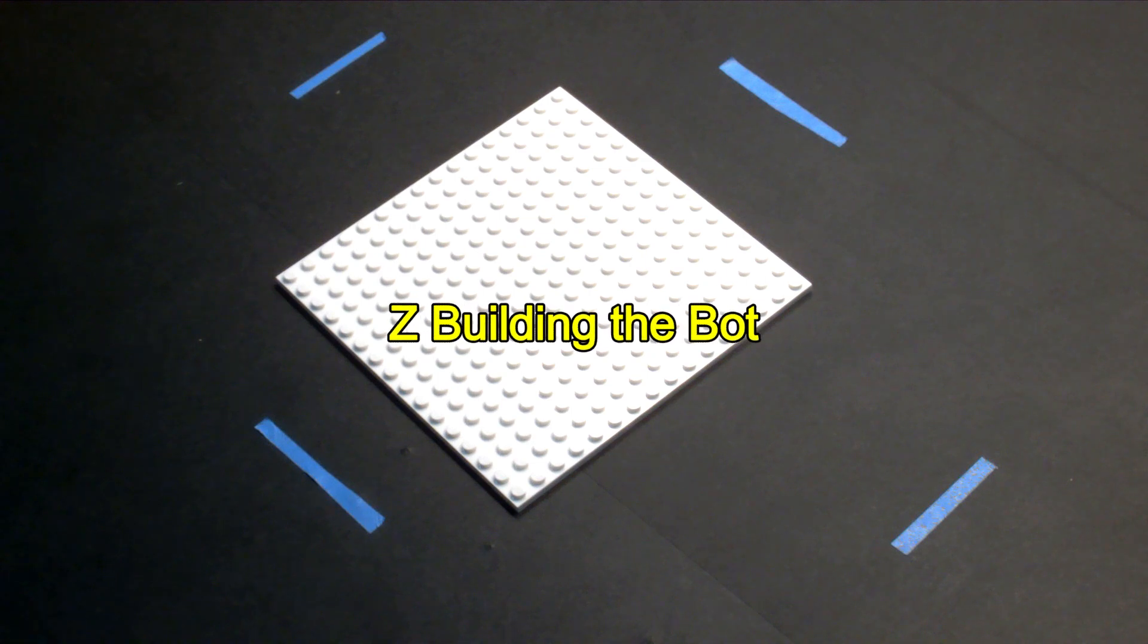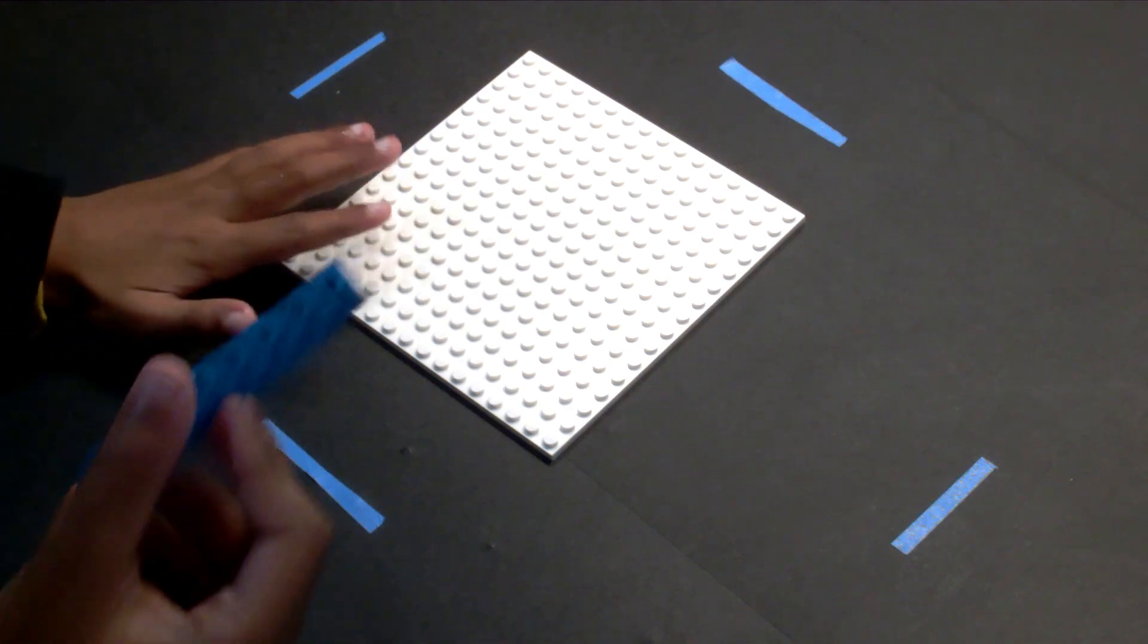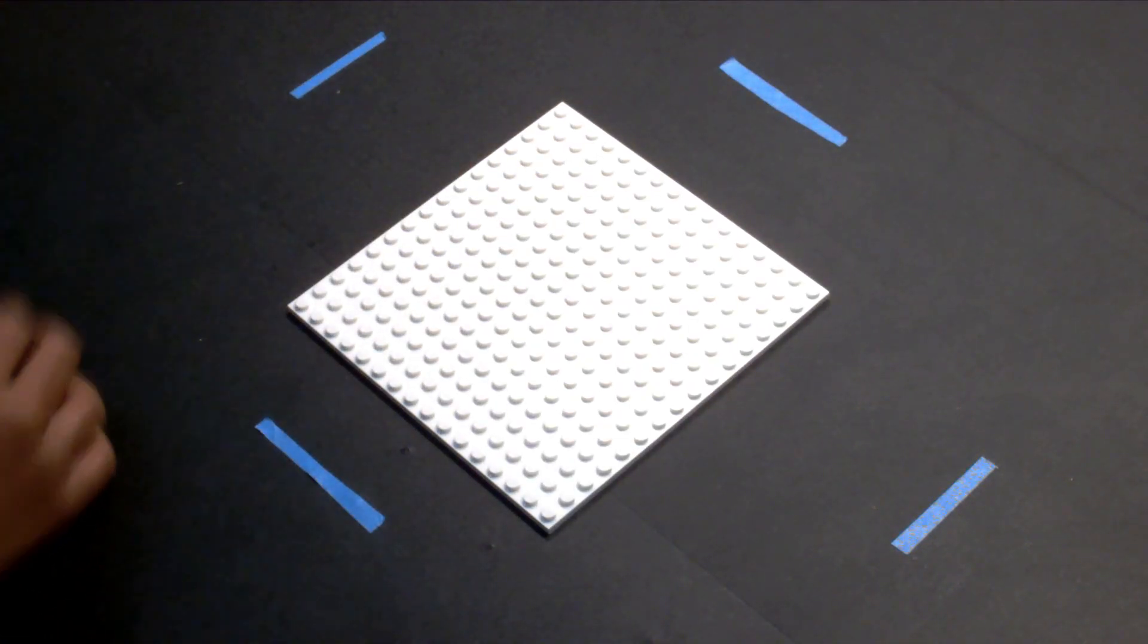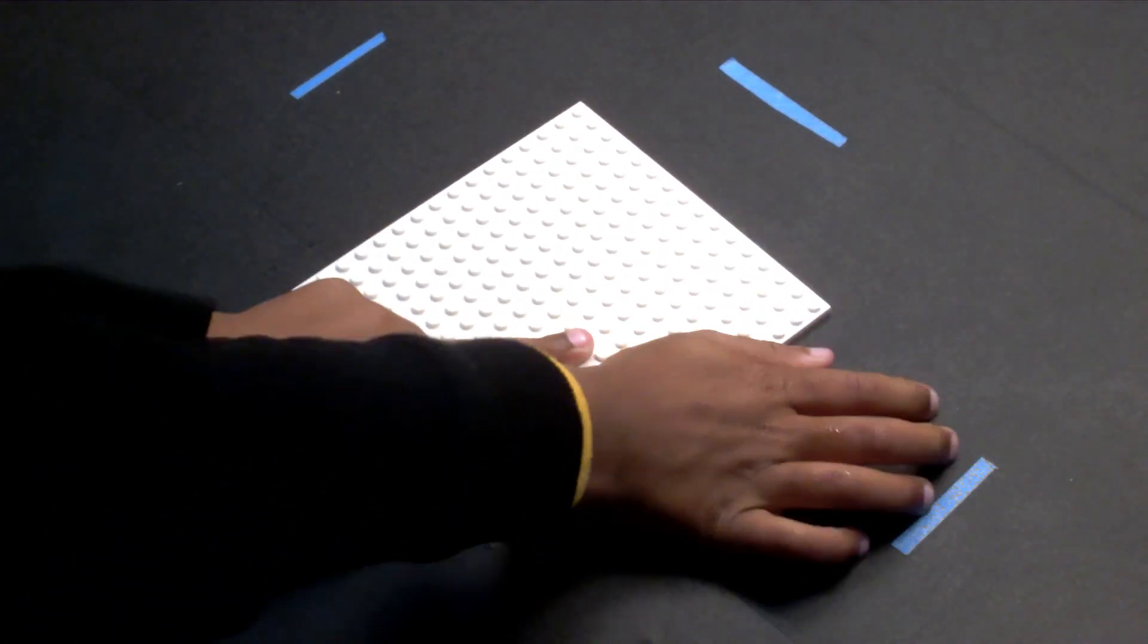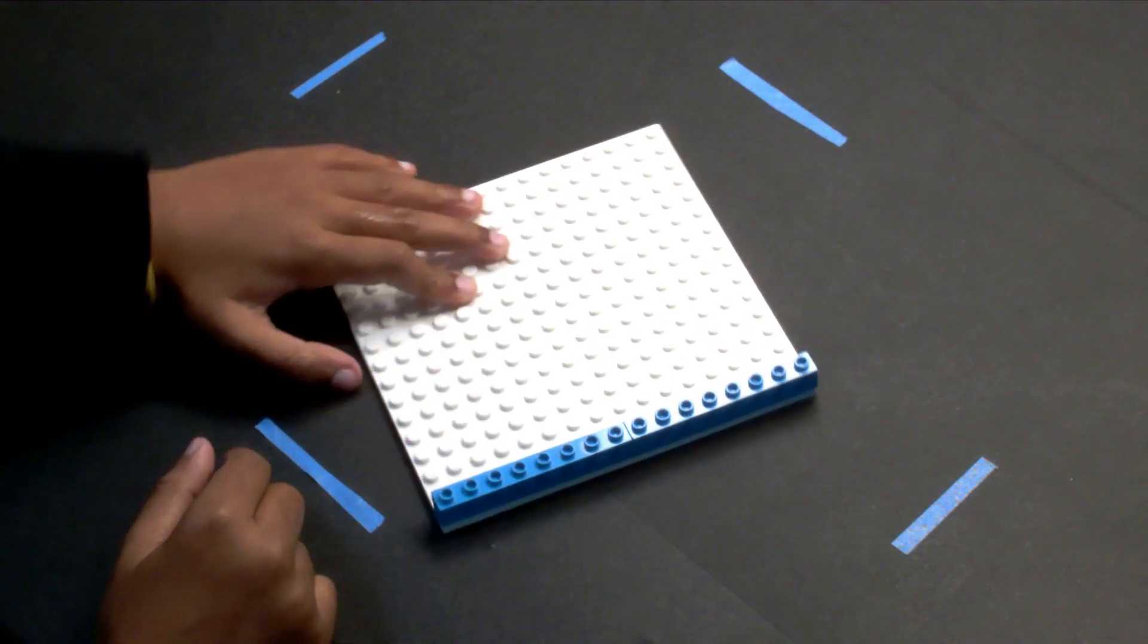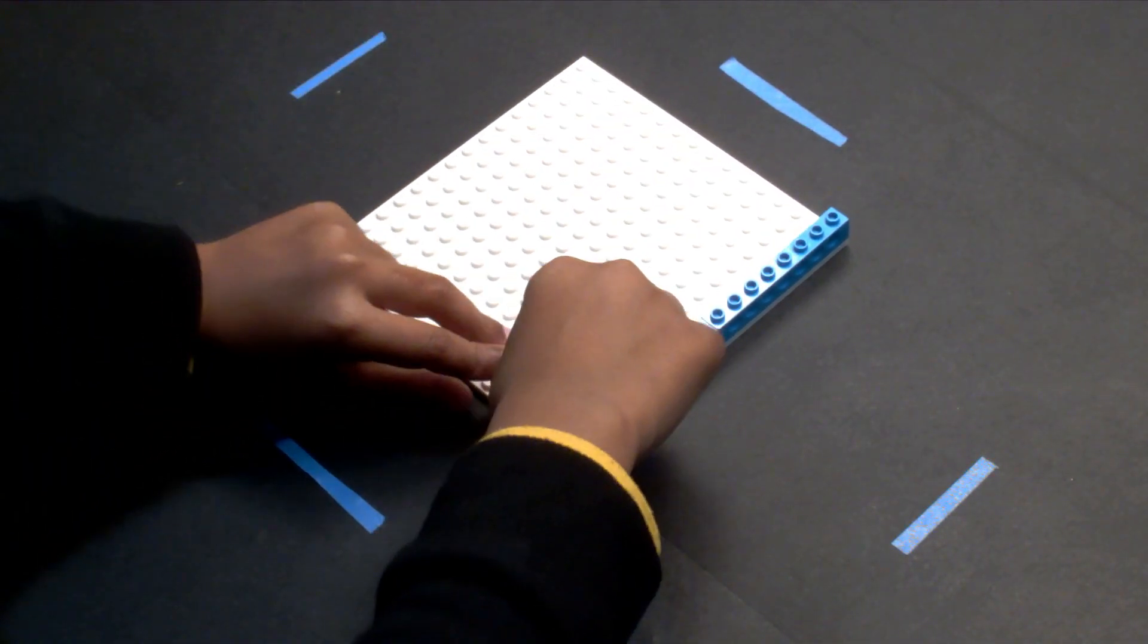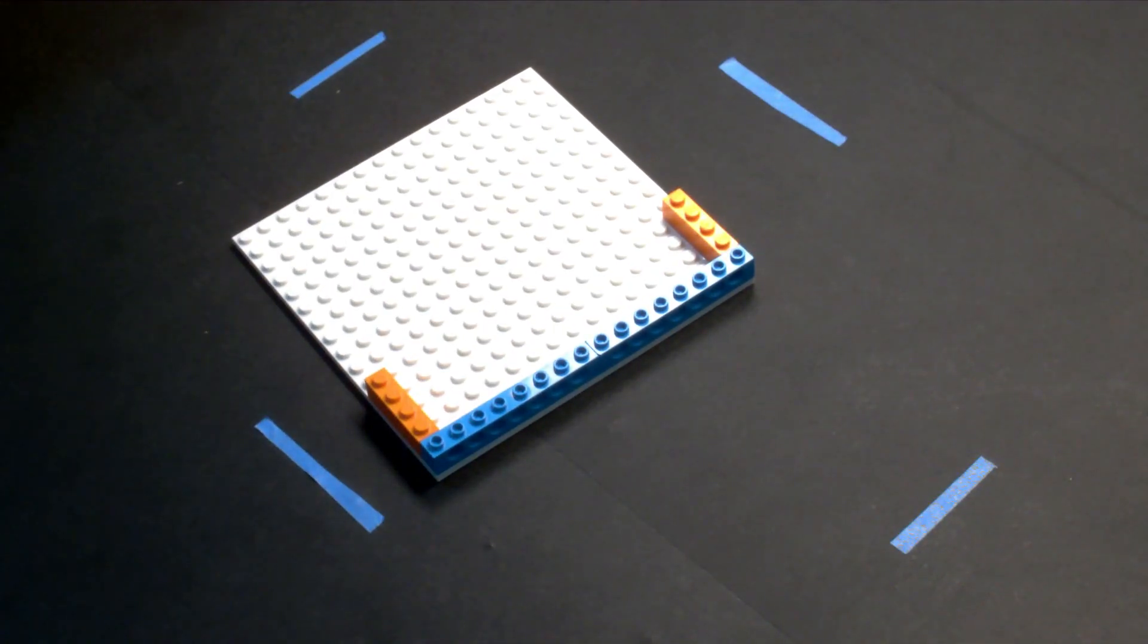So our first step is to take a base plate, put it here. Then we take this, put it here. Wait no, it's not the right size. Oh yeah, we take two of these, put one here. There we take two of these random colors, put one here, put one here.